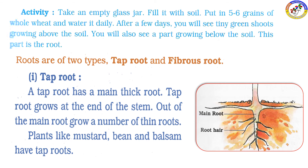First, the root. The root has a mainly thick root that grows at the end of the stem. Out of the main root grow a number of thin roots. Plants like mustard, bean, and balsam have tap roots.